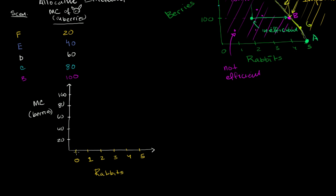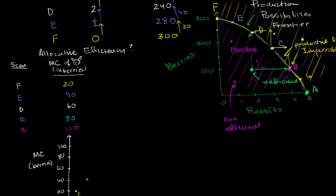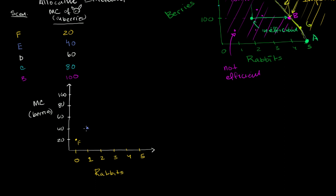Scenario F is when we had zero rabbits, and the marginal cost of trying to get another rabbit is 20 berries. Scenario E is where we already had one rabbit — marginal cost of getting another is 40. Scenario D: marginal cost is 60, we already have two rabbits and we're thinking about getting a third. Scenario C: we already have three rabbits thinking about getting a fourth, marginal cost is 80. And scenario B: we already have four rabbits thinking about getting a fifth, and we'd have to give up 100 berries.